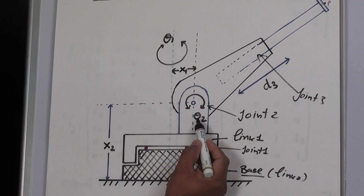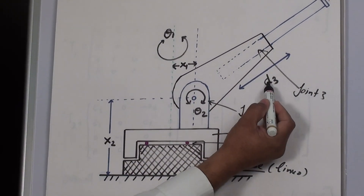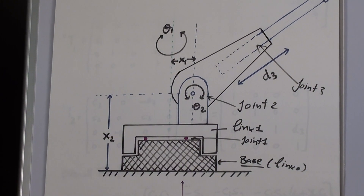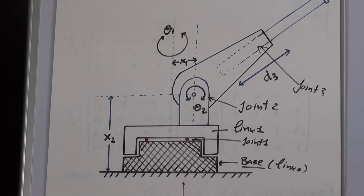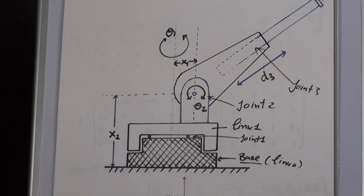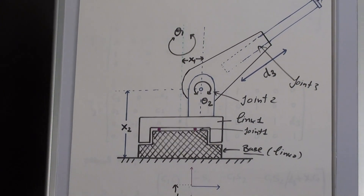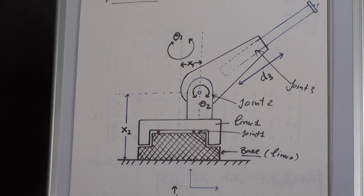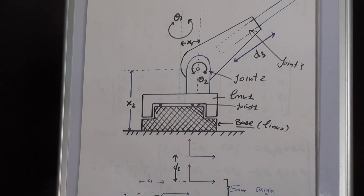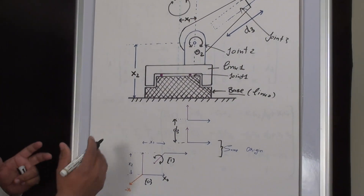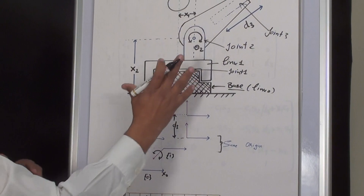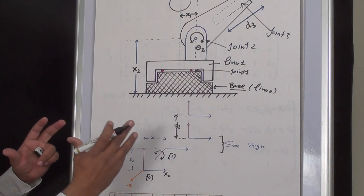The next task is to find the various frames. We already know that we assign a zero frame on the base aligned with the first link. This frame here is the zero frame, and this frame is frame one. The first step is to identify the frames on the different parts of the physical structure of the manipulator.